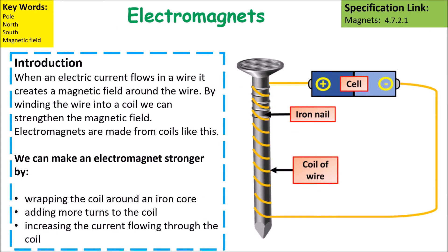When an electric current flows through a wire it creates a magnetic field around the wire. By winding the wire into a coil we can strengthen the magnetic field. Electromagnets are made from coils like this.